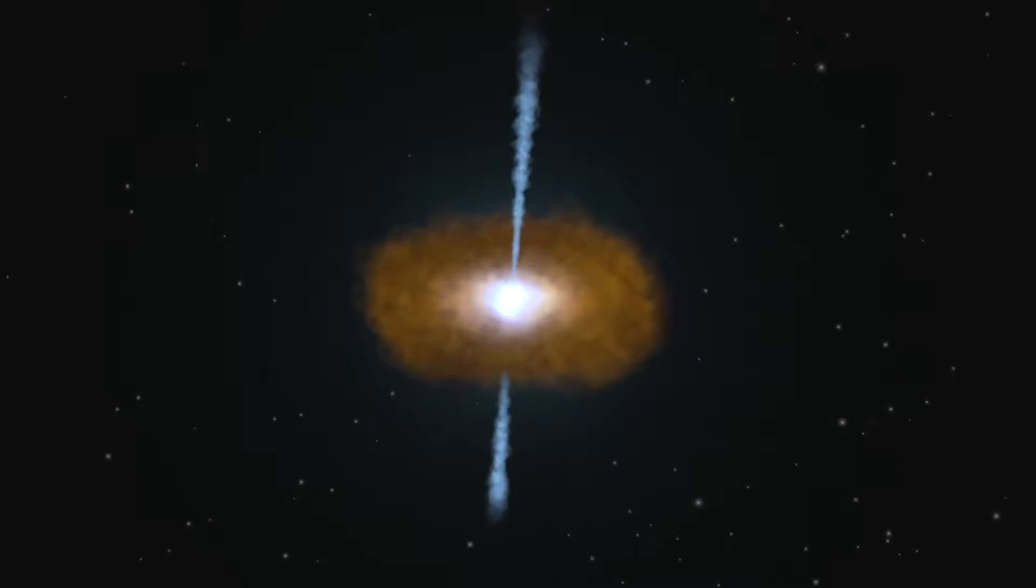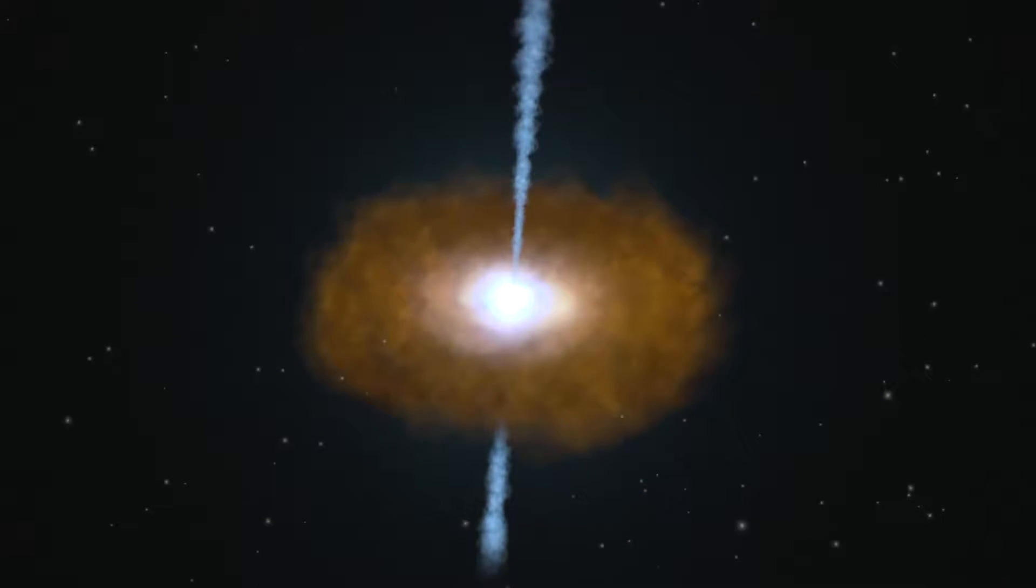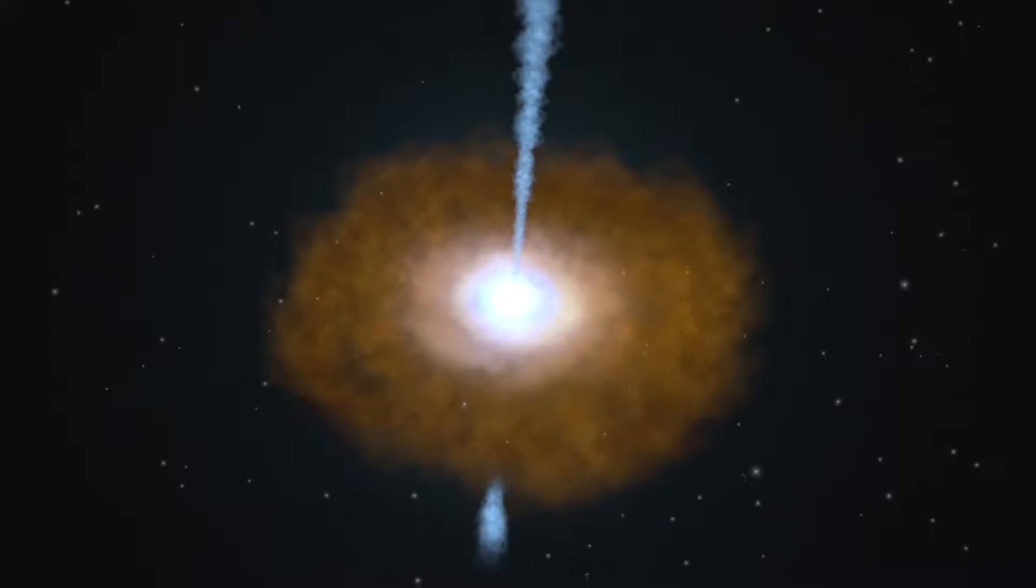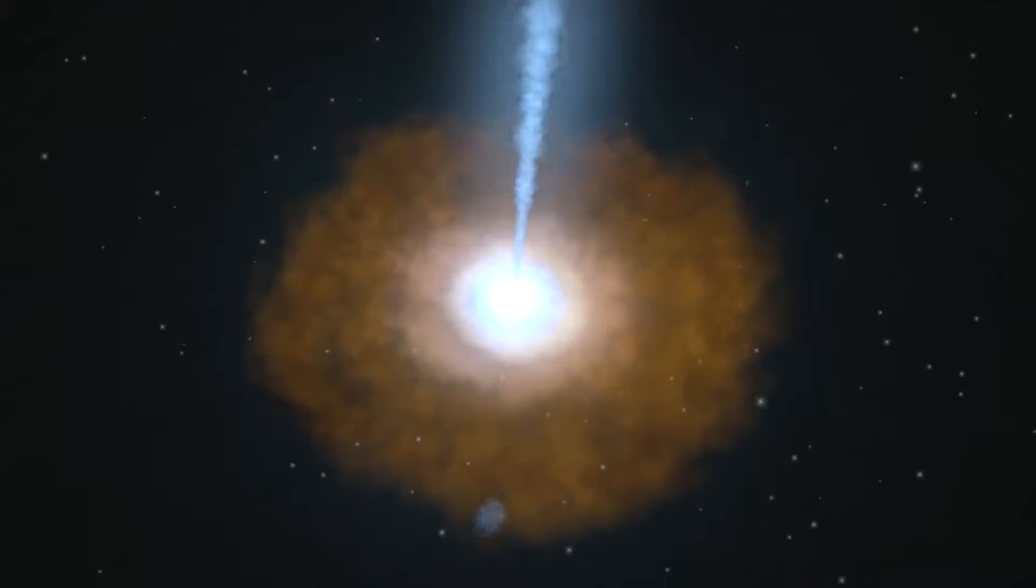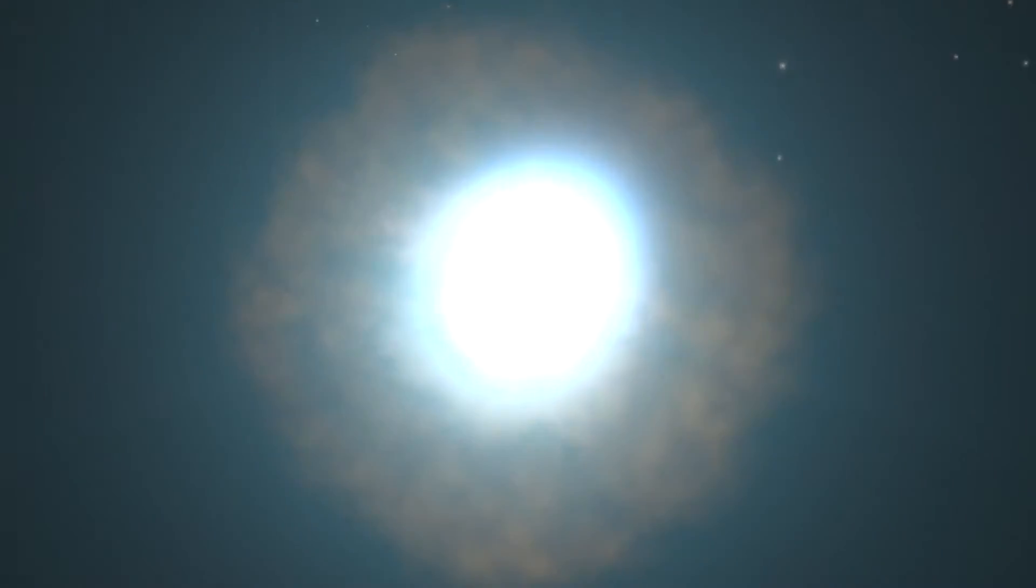Like all active galaxies, a blazar gets its energy from matter falling toward a central supermassive black hole. A small part of this material forms particle jets that travel outward in opposite directions at near the speed of light. What makes blazars so intense is that we happen to be looking almost directly down the jet.